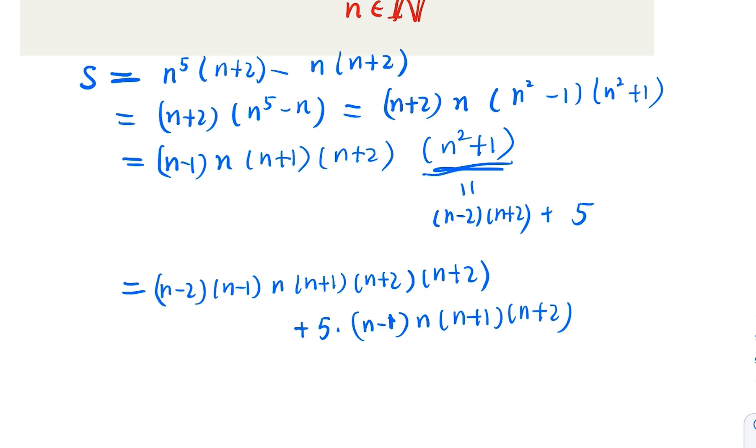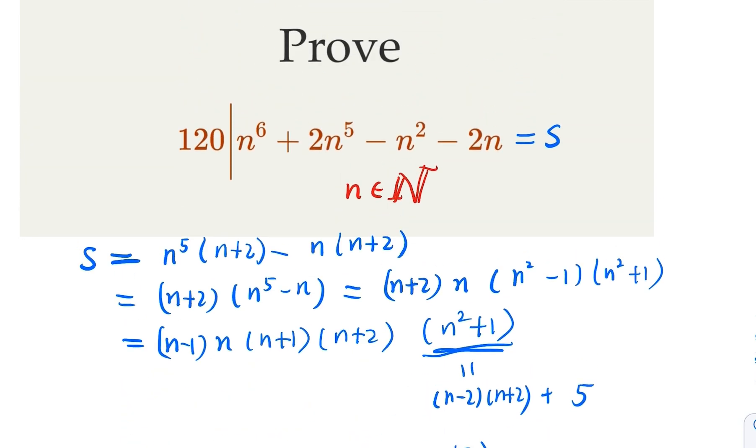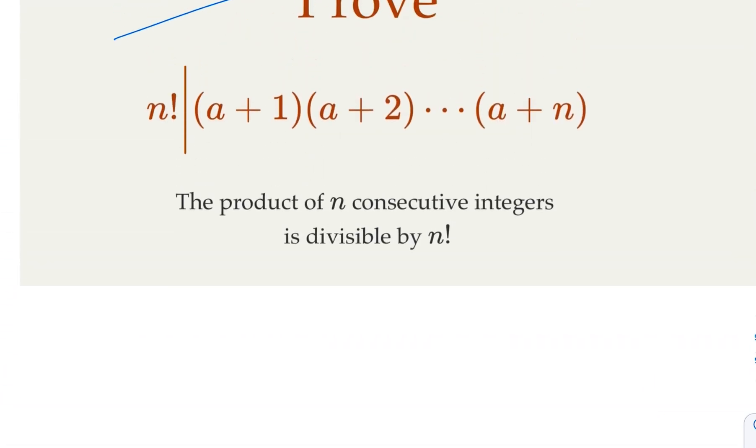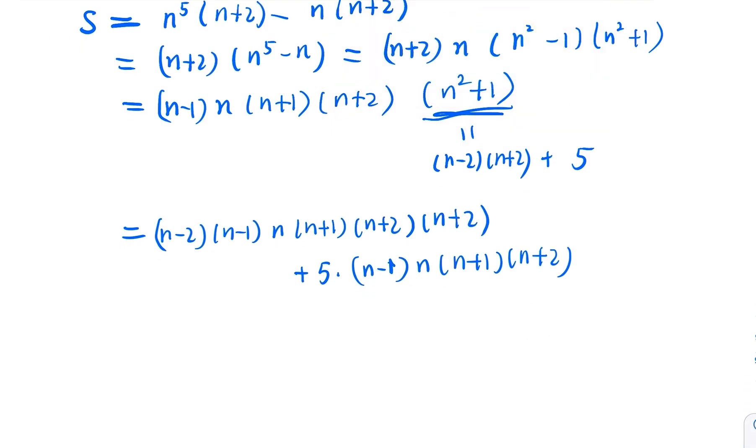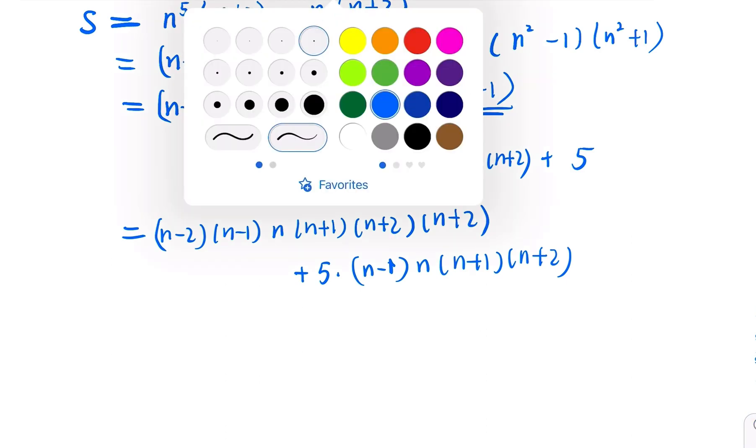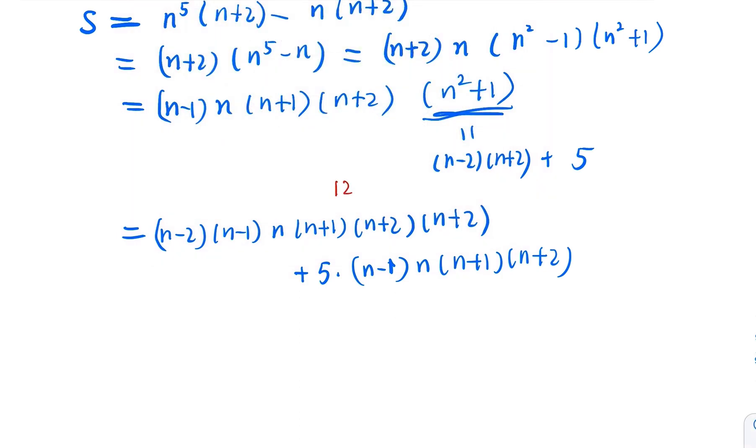So here, what we derived is five consecutive numbers here, and four consecutive. Now by the earlier fact that n factorial divides n consecutive integers, we know that the first term is five consecutive integers. So that's going to be a multiple of 120. And here is going to be four factorial multiples, that is 24. But if it times five, that becomes 120.